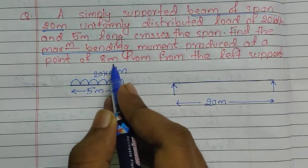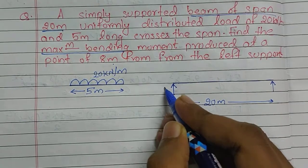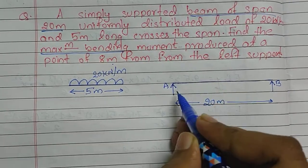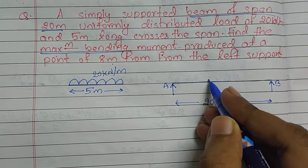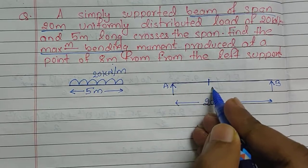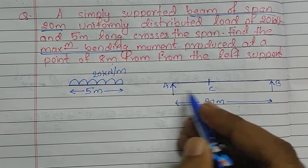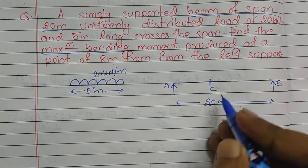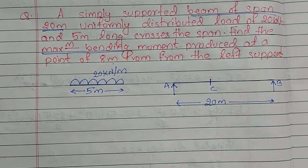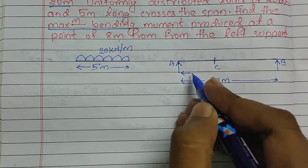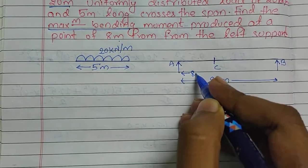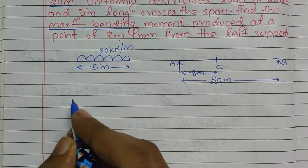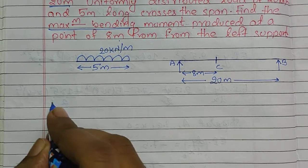Now we are asked to find the maximum bending moment at a point 8 meters from the left support. Suppose this is point A and this is point B. We are asked to find the maximum bending moment at 8 meters from point A — let us call this point C. This is our point C which is at 8 meters from A.